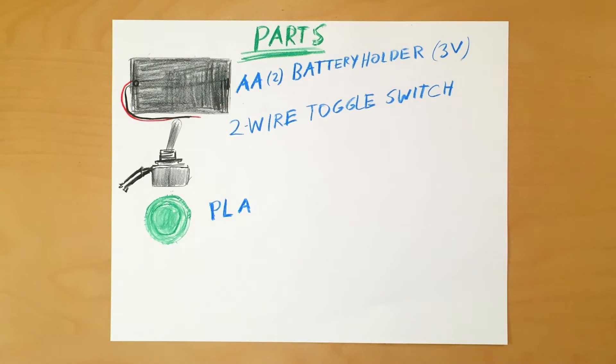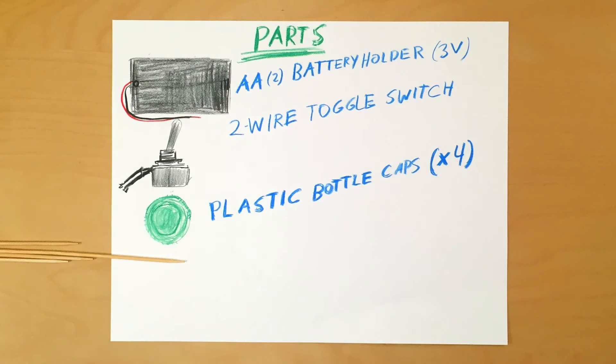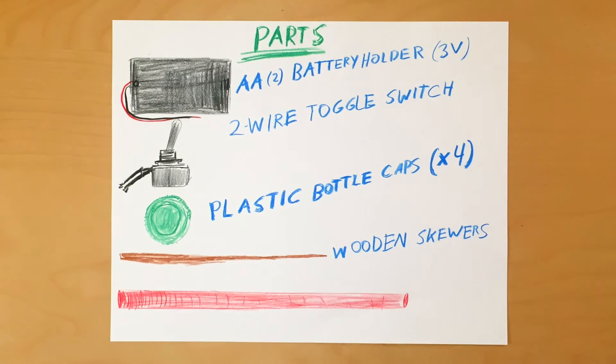Next, grab four plastic bottle caps of the same size. Then get some wooden skewers and a drinking straw. Finally, get a DC motor and a small propeller.